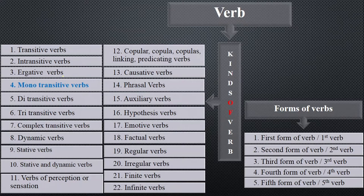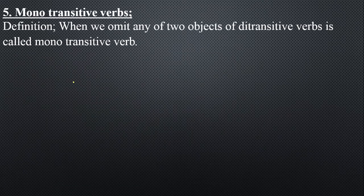Today we have got the fourth kind of verb, which is known as mono transitive verbs. Mono means one; transitive means a verb which can be changed into passive voice and which shows an action. The definition of mono transitive verbs: when we omit any one of the two objects of di-transitive verbs, it is called mono transitive verbs — when you omit, reject, or remove one of those two objects.